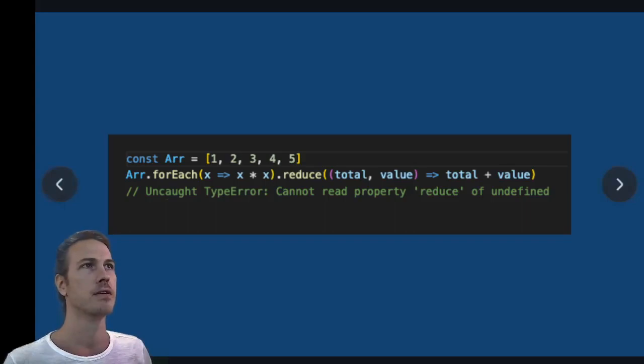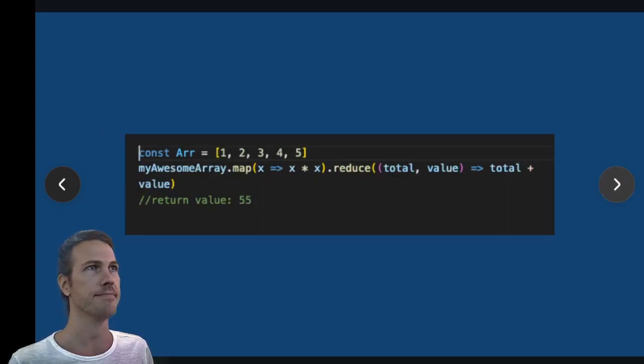forEach is going to return undefined in this scenario, and so then you're going to be running methods on undefined which isn't going to work. It's just going to throw this error back at you. Whereas map is going to return a new array based off of the function that it was having within it, and then you can run any other methods that you want on that array.